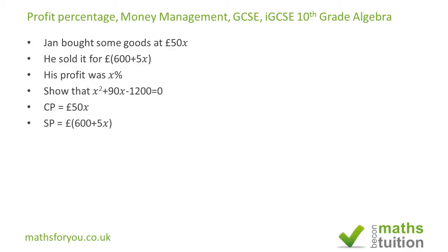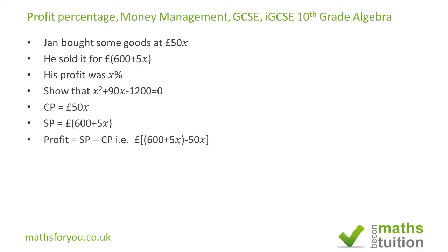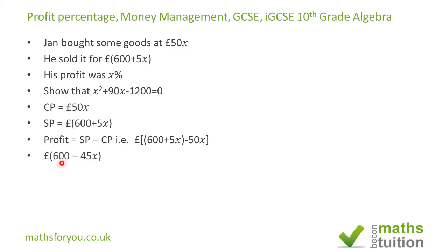The cost price is 50X pounds and the selling price is 600 plus 5X. The profit is selling price minus cost price: 600 plus 5X minus 50X. Since 5X minus 50X gives minus 45X, the profit is 600 minus 45X pounds.